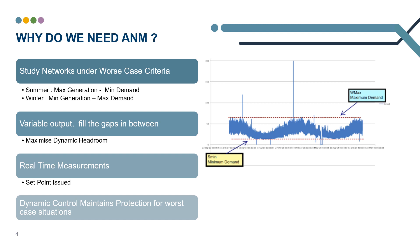This study method effectively caps the maximum amount of capacity we can connect. However, it does leave opportunity for variable output systems that effectively fill the gaps in between. By deploying real time A&M systems, we can make the most of this dynamic headroom available on the network and connect additional resource that may otherwise have required reinforcements.